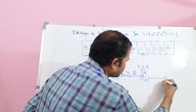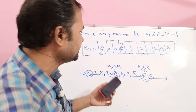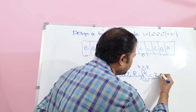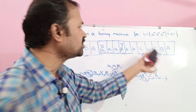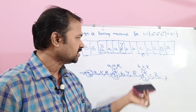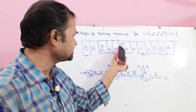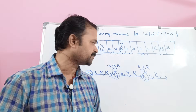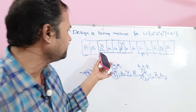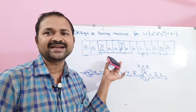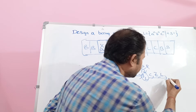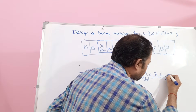Next, if we apply C on Q2, then change the content to Z and move the read/write head towards the left. This is because this A, this B, and this C are corresponding symbols. So we have to move the head towards the left until we get X — because we replaced A with X. Change the state from Q2 to Q3.